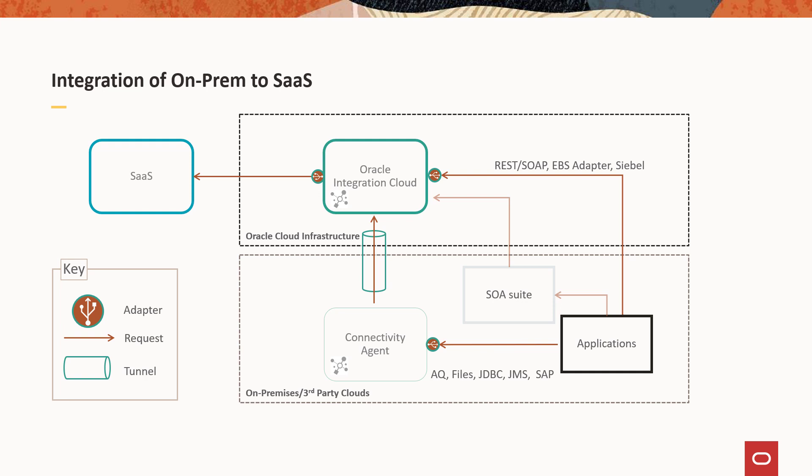Usually, as long as applications use the right proxy, they can go through the firewall, though some companies have an additional allow listing requirement. However, if you're trying to have a trigger based on Oracle AQ, reading a file, querying a database, messages on a queue, or SAP, those triggers all go through the connectivity agent because they are not using standard HTTPS protocols — they use SQL Net or other protocols. Bottom line: applications using HTTPS go straight to OIC even if they're on a private network; other protocols must go through the connectivity agent.